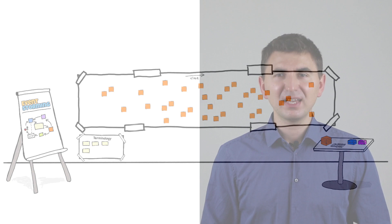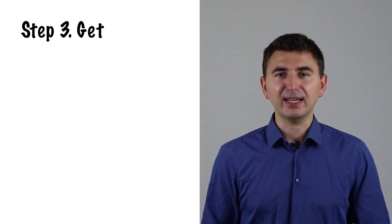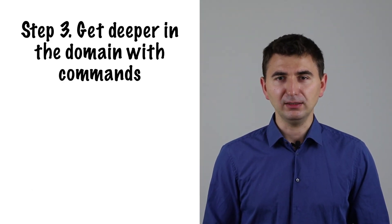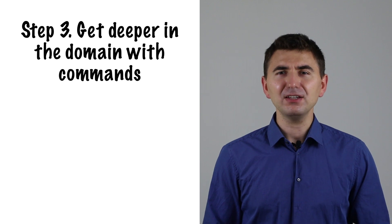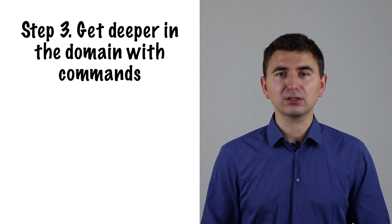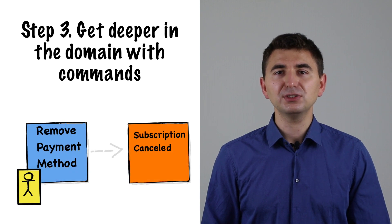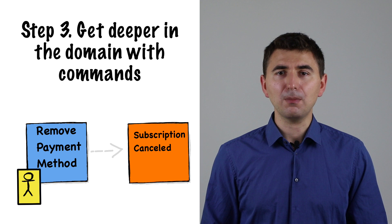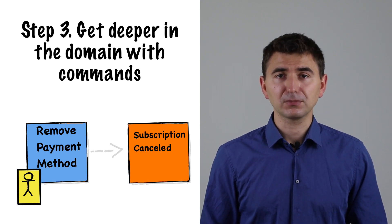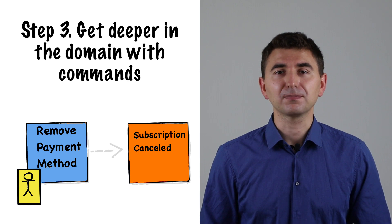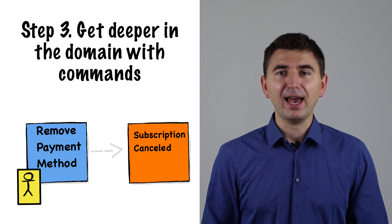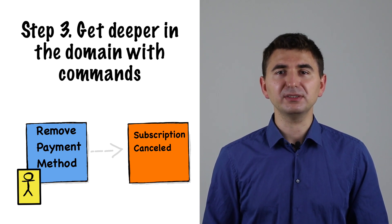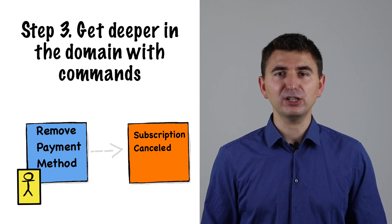Step 3: Start getting deeper into the mechanics and core components of the domain. Step 4: After having all the events visualized and ordered chronologically, start adding blue stickers that represent user actions, intentions or decisions. We will call them commands. For example: cancel subscription or order pizza. Alongside, add small yellow stickers that represent the actor performing the interaction.